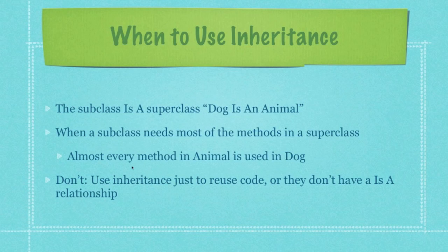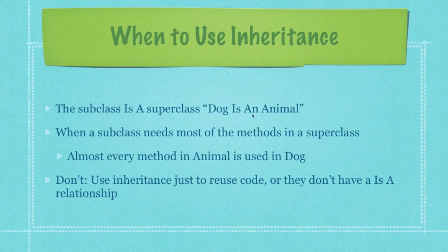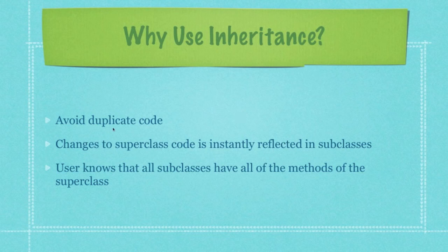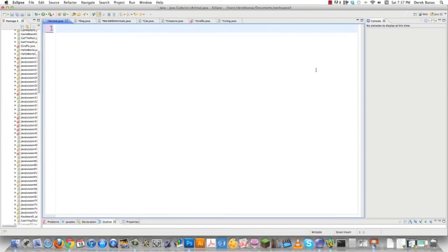So when exactly should you use inheritance? If the is-a principle works — like dog is an animal — then chances are inheritance makes a lot of sense. Also, when a subclass needs most of the methods in the superclass, like dog needing almost every method inside of animal, that is also a good situation where inheritance is going to help you out. You should not use inheritance just to reuse code — if the is-a principle doesn't work, inheritance probably doesn't make sense either. Some other reasons we use inheritance: it helps us avoid duplicate code, changes to the superclass code are instantly reflected in all of the subclasses, and users know that all subclasses automatically have all of the methods created inside of the superclass.